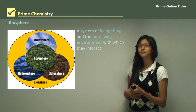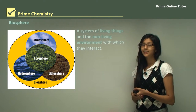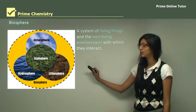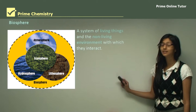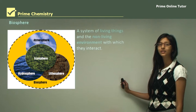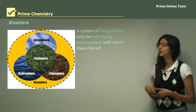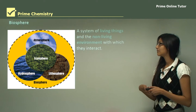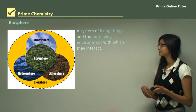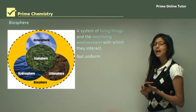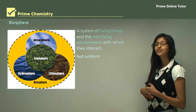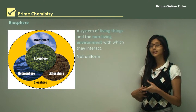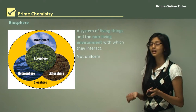Now let's look at the first layer, the biosphere. As you can see in this diagram, the biosphere consists of all four spheres. The biosphere consists of all the living things and non-living things present on each of these layers. The biosphere is a system of living things and non-living things in the environment with which they interact. The biosphere is not uniform — if you go to a different country you will see different types of animals compared to Australia living there.